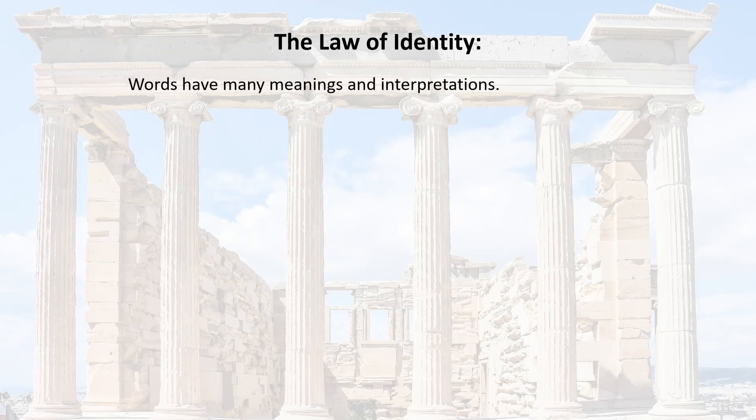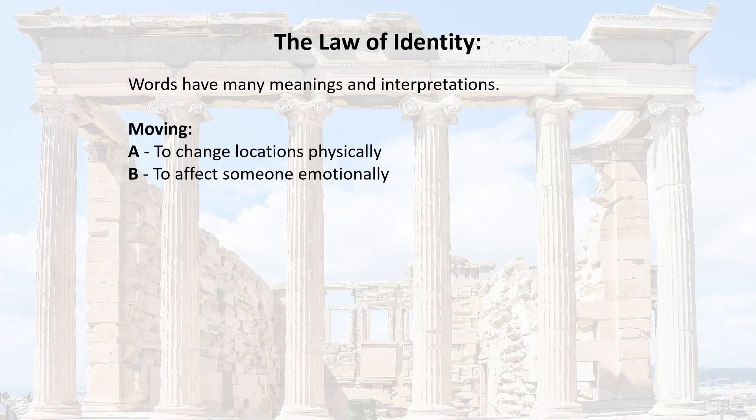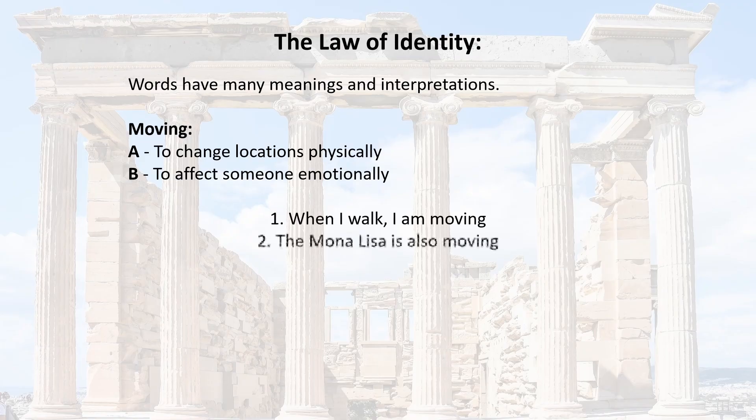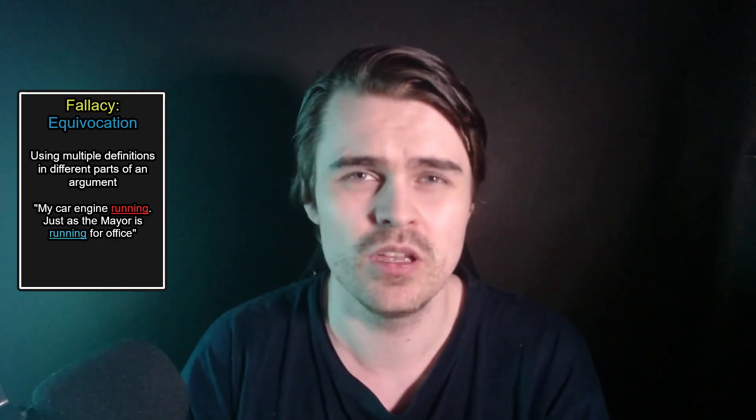This sounds very simple but you'd be surprised how often this is done wrong. For example, there's a thing called an equivocation fallacy. Words have meanings and interpretations. Take the word 'moving' — definition A would be to change locations physically, and B would be to affect someone emotionally. Consider this argument: 'When I walk I am moving. The Mona Lisa is also moving. Therefore we are both moving.' This commits an equivocation fallacy, where you mix definitions of one word in the middle of an argument. You have to keep the definition the same, or specify when you change it.